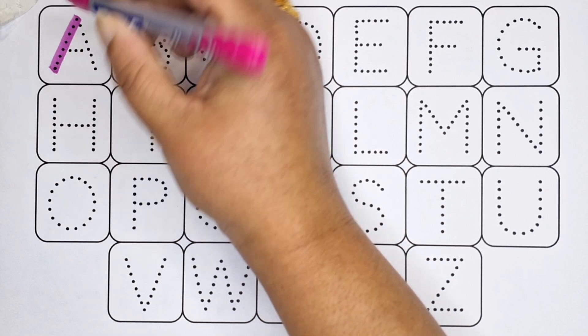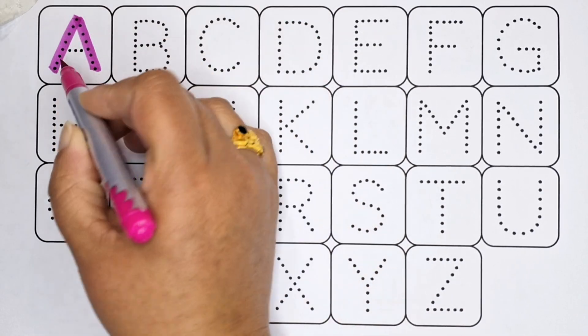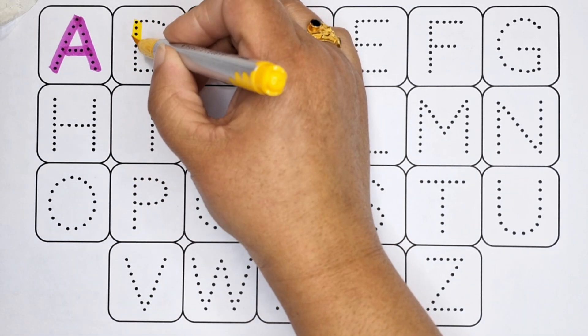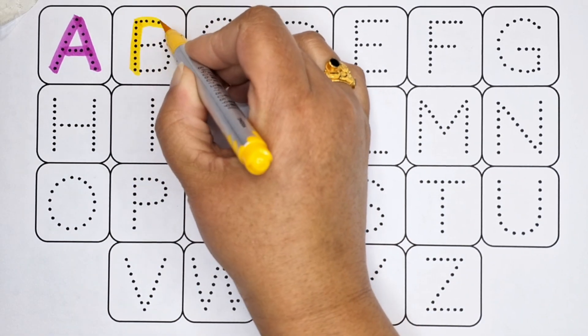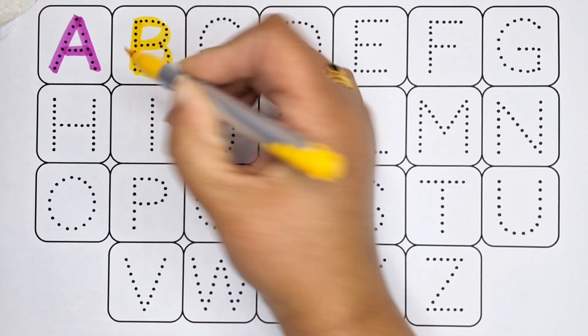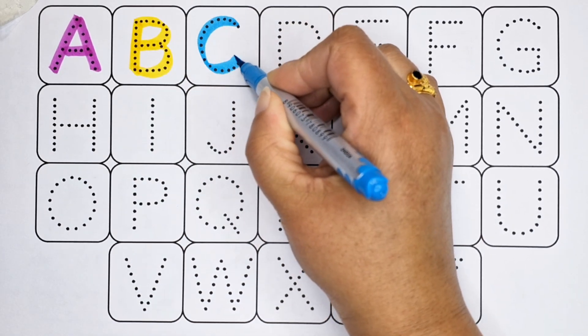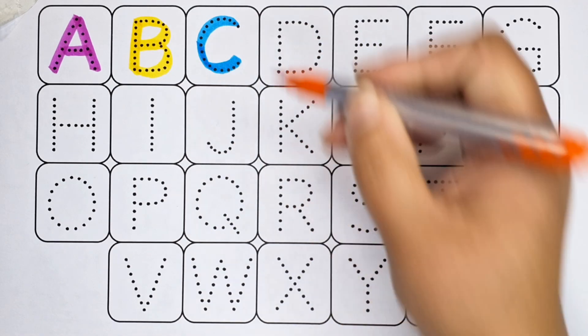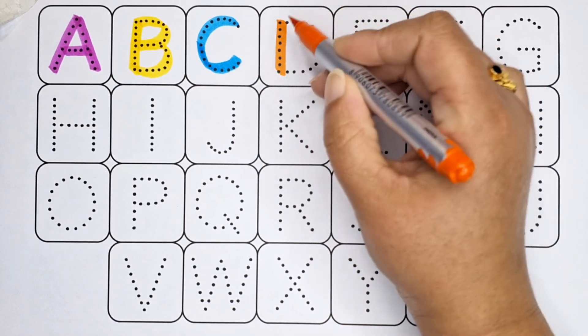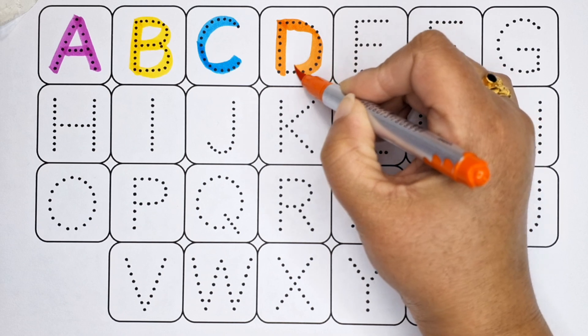A, A for alligator. B, B for bat. C, C for crow. D, D for donuts.